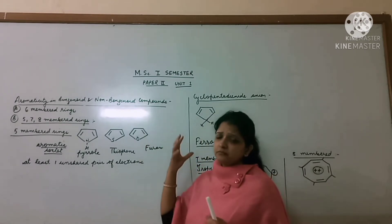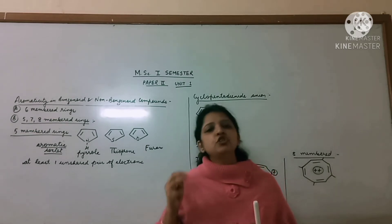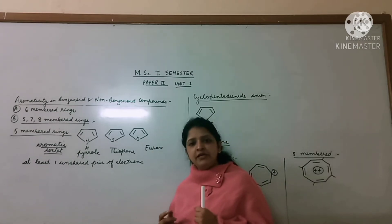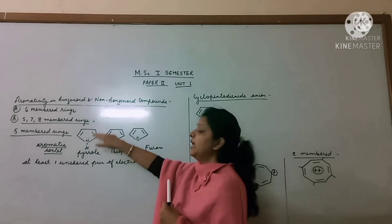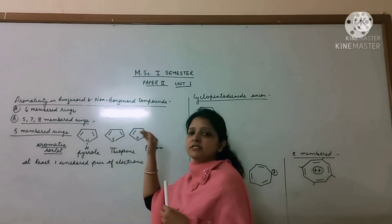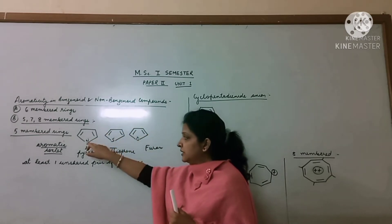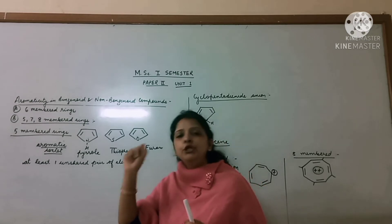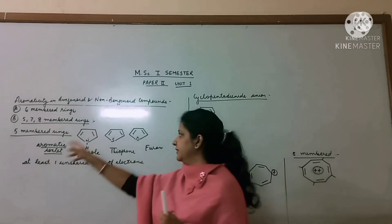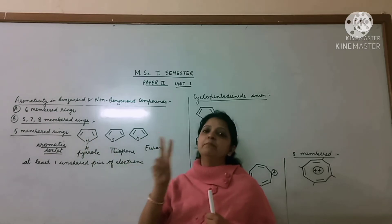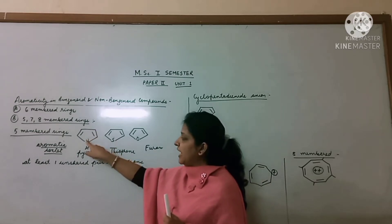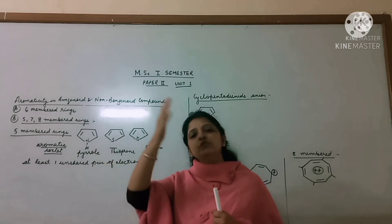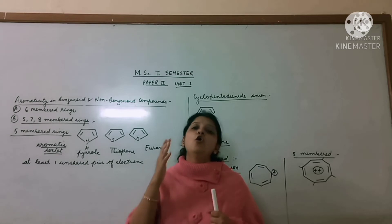In benzene, naturally there are three double bonds, so 6 pi electrons are automatically present in the molecule. In these 5-membered molecules, a heteroatom is present, and due to its presence, the unshared pair of electrons — the lone pair — helps the molecule constitute an aromatic sextet. There are already 4 pi electrons present, and nitrogen, sulfur, or oxygen donates its lone pair of electrons into the ring, and the aromatic sextet is constituted.